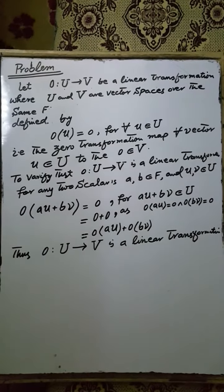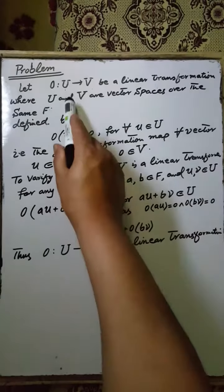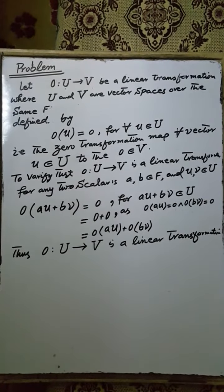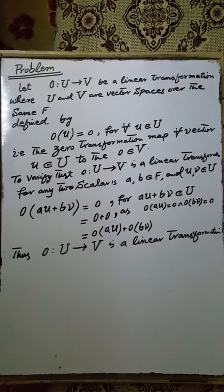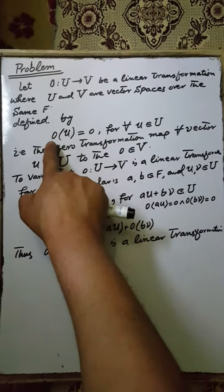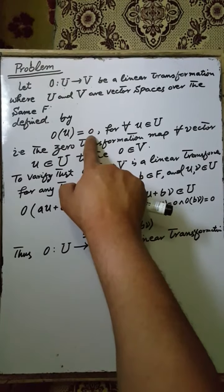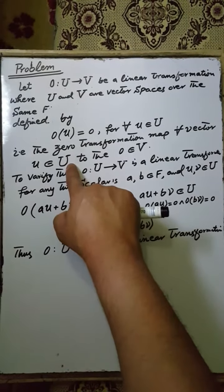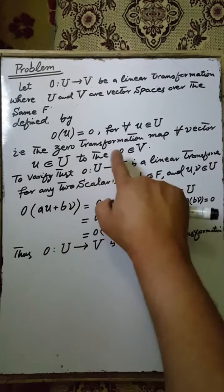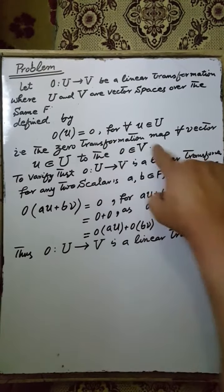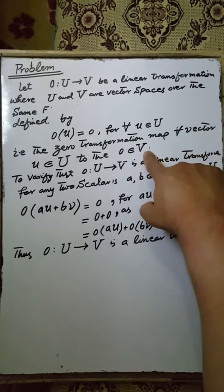Consider the zero mapping from the vector space U to the vector space V over the same field F, defined by 0(u) = 0 for u an element of the vector space U, where 0 is an element of the vector space V.